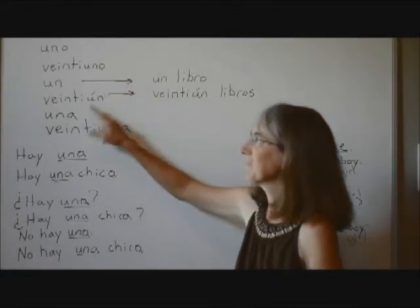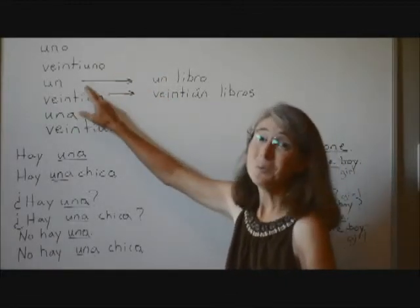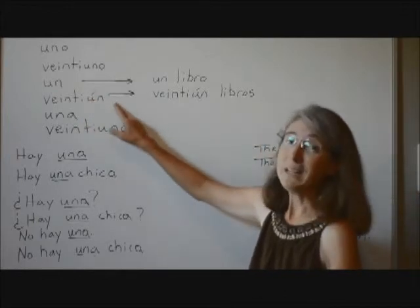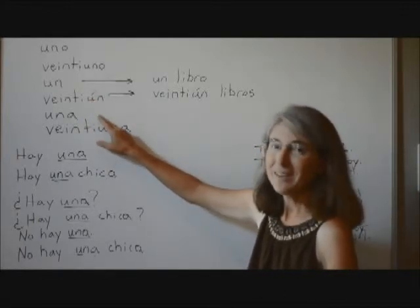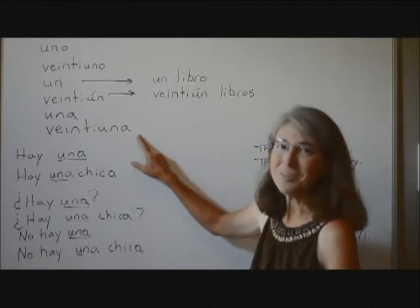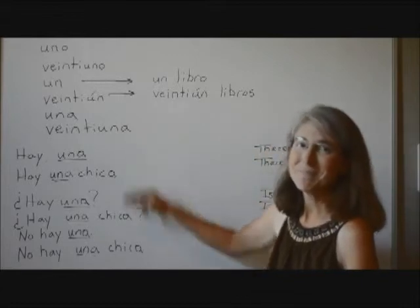But if we're talking about something feminine, like 'chicas' — we have 21 girls — 'veintiuna chicas,' or 'casas' — then we have 21 houses — 'veintiuna casas.' When you go to an all-girls school, we have 21 girl students: 'veintiuna estudiantes.' If we have one student that's a girl: 'una estudiante.'